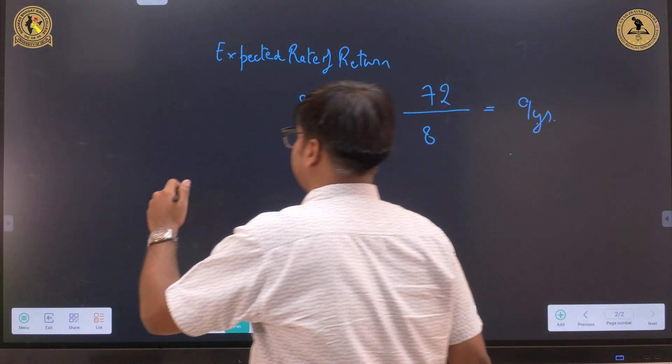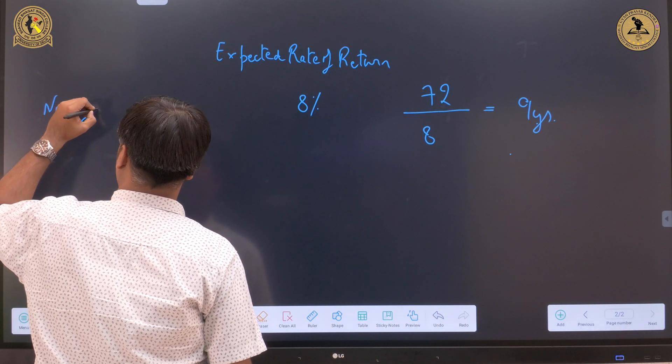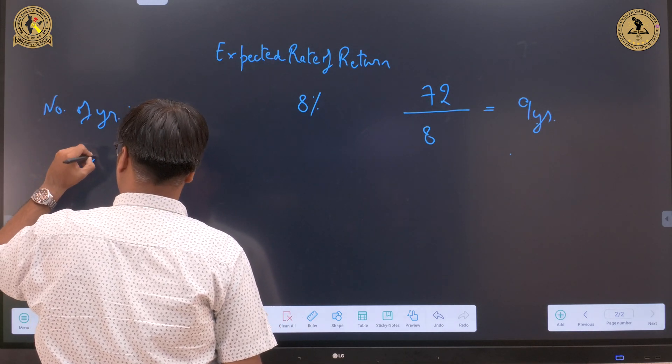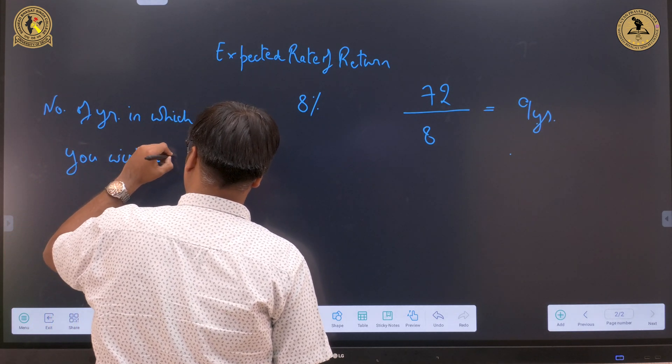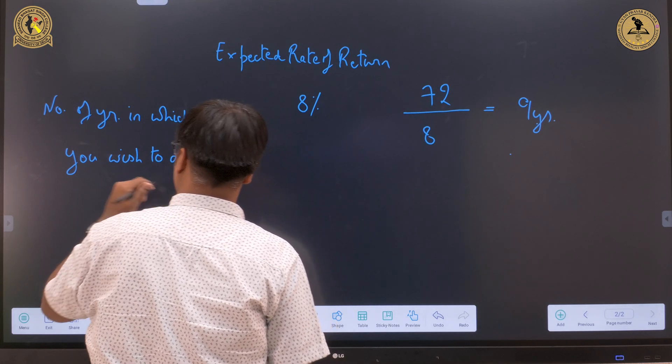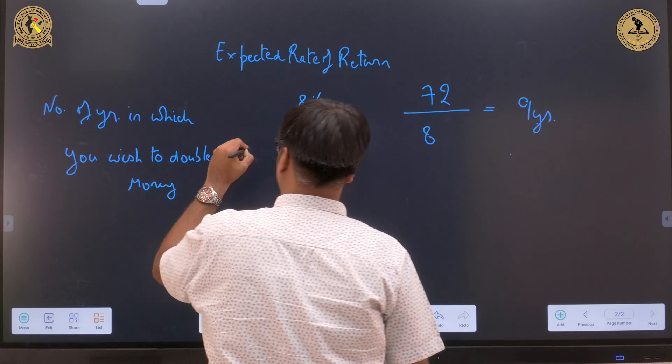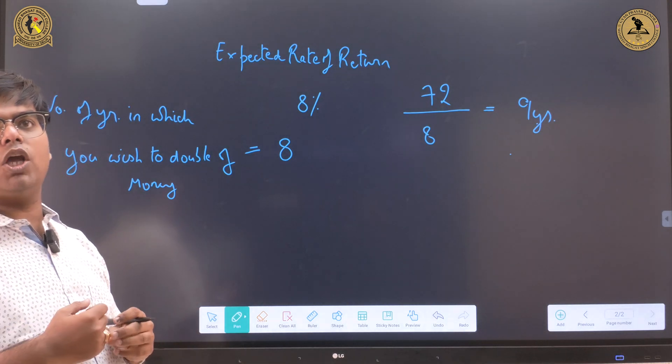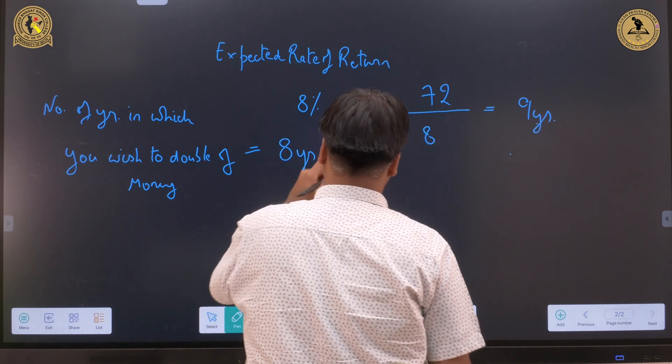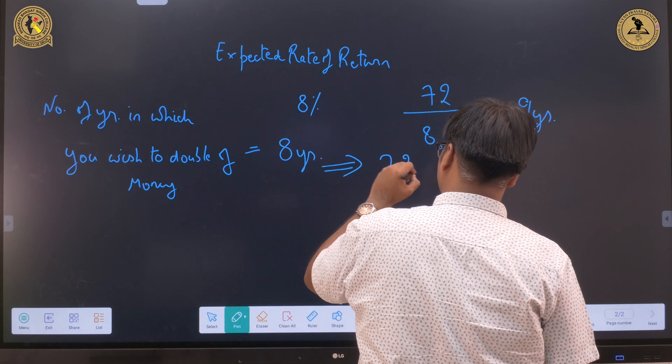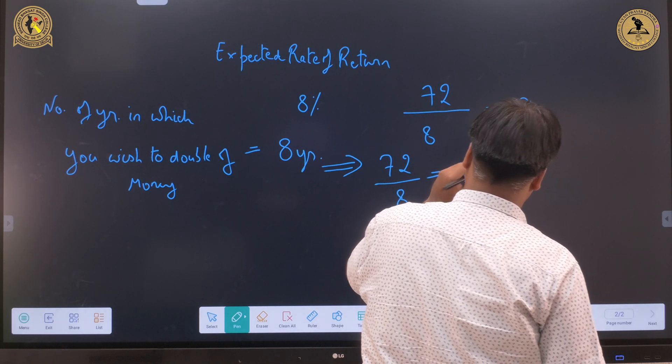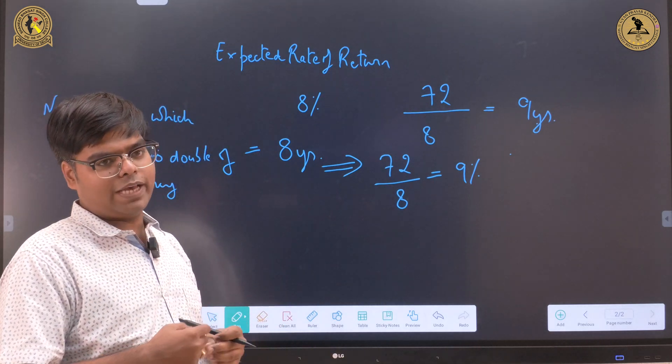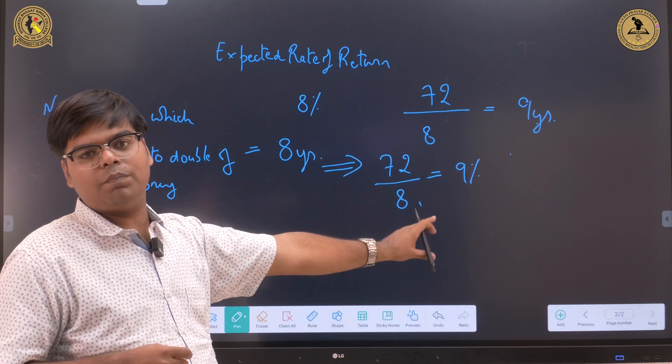By dividing 72 by the number of years in which you wish to double your money. Let us again take one example. If the number of years in which you wish to double your money is 8 years, the expected rate of return comes out to be 9% per annum. So the investment in which you are planning to invest must yield an expected rate of return of 9% per annum.